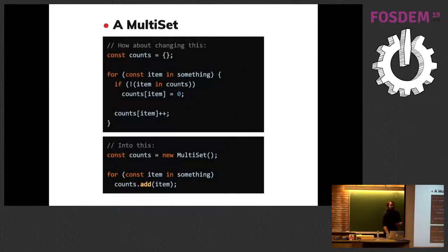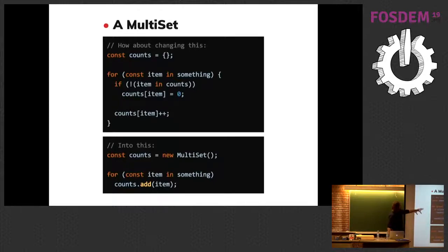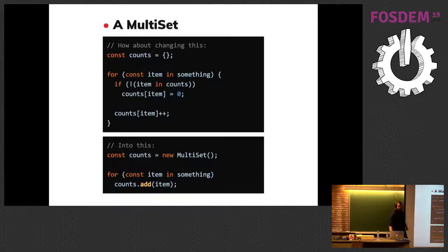For instance, you can implement something called a multi-set — a set in which you can store an item more than once. If you need to count the number of occurrences of an item in a sequence in basic JavaScript, you write this nasty code: you iterate over the list, check if the item already exists, set it to zero, then increment, and so on. That's bookkeeping. Whereas if you have a multi-set, you abstract that complexity away and delegate the bookkeeping to the custom data structure.